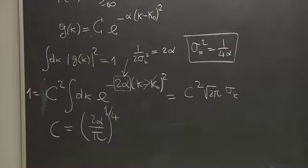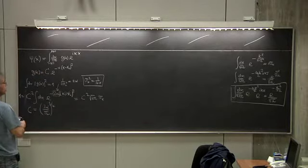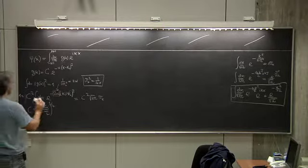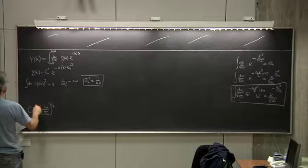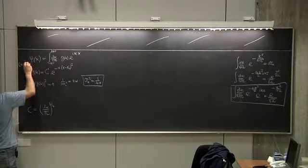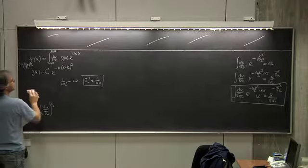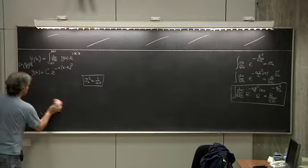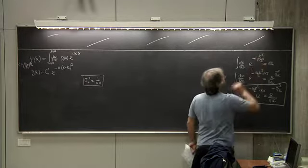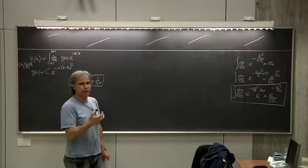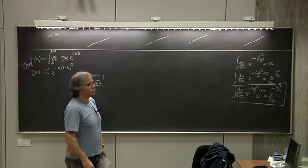Very simple algebra — this is just a side discussion showing how to use that formula to calculate the normalization constant. So C equals two alpha over pi to the one-fourth. This way of writing the Gaussian is particularly nice because sigma k has a very clear physical meaning: sigma k is the width of the Gaussian, and also gives you the second moment.